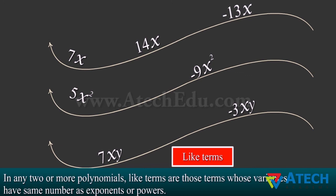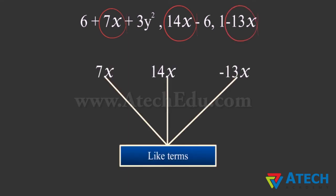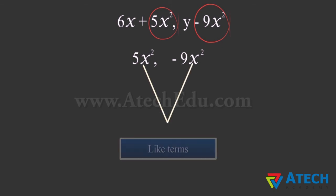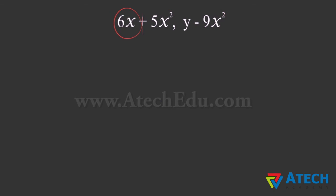In any two or more polynomials, like terms are those terms whose variables have same number as exponents or powers. In three different polynomials, 7x, 14x, minus 13x are like terms. Similarly, 5x squared and minus 9x squared are also like terms.